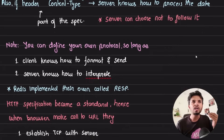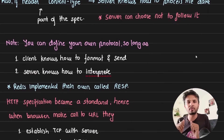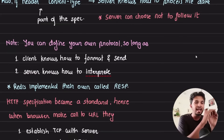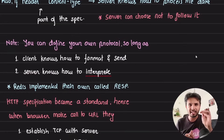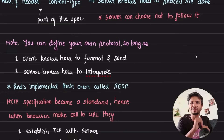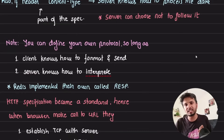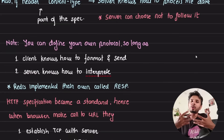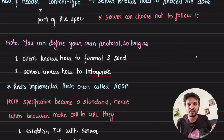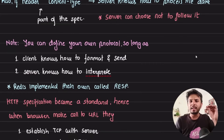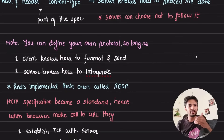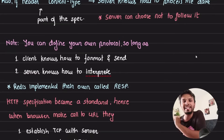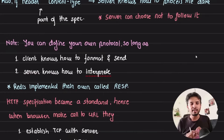You can define your own protocol just like HTTP is a specification. RESP was Redis's first specification — when a client wanted to talk to a Redis server, it established a TCP connection and fired 'SET key value' followed by Enter. That was the protocol. RESP v2 has since come in, but that was the initial protocol. You can write your own protocol — nothing is stopping you — as long as your client knows how to format it.